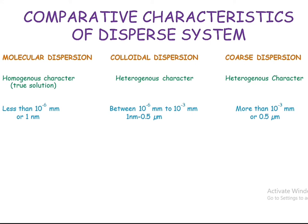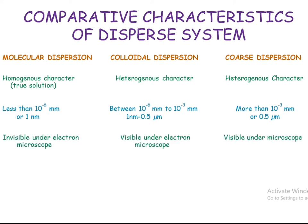On the basis of size, molecular dispersions have a size less than 10⁻⁶ mm, or 1 nanometer. Colloidal dispersions have a size between 10⁻⁶ mm to 10⁻³ mm, that is, 1 nanometer to 0.5 micrometer. Coarse dispersions are larger than colloidal dispersions — that means more than 0.5 micrometer.